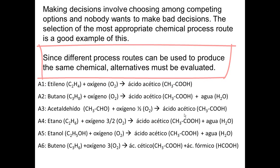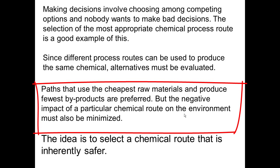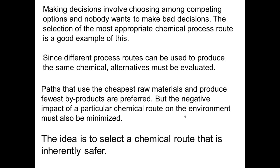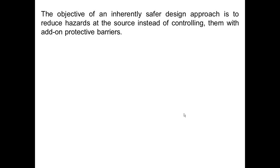Paths that use the cheapest raw materials and produce fewest byproducts are preferred. But the negative impact of a particular chemical route on the environment must also be minimized. The idea is to select a chemical route that is inherently safer. The objective of an inherently safer design approach is to reduce hazards at the source, instead of controlling them with add-on protective barriers.